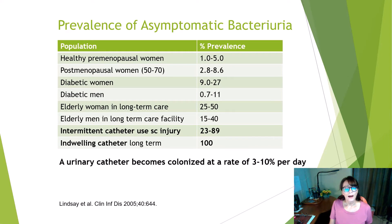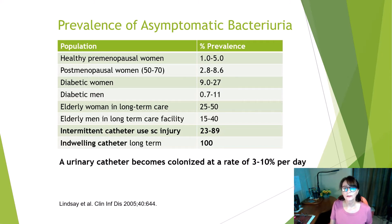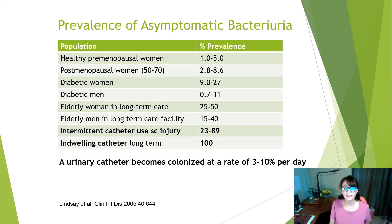I want to remind you of the prevalence of asymptomatic bacteriuria. Look at the bottom line: if you have a long-term urinary catheter in place, about 100% of the time, if you test that urine, it's going to have a positive culture. Asymptomatic means people don't have any symptoms — the bacteria is just sitting there.